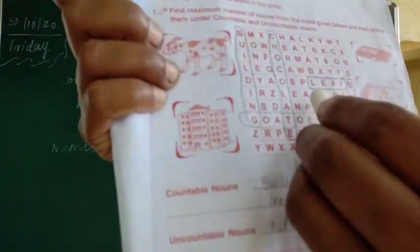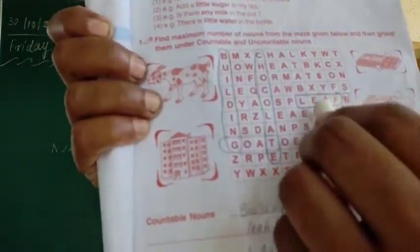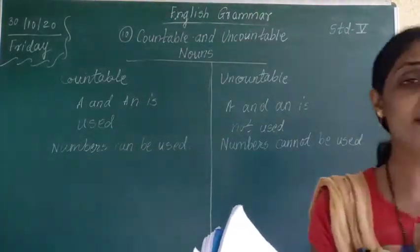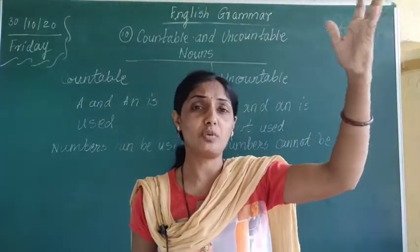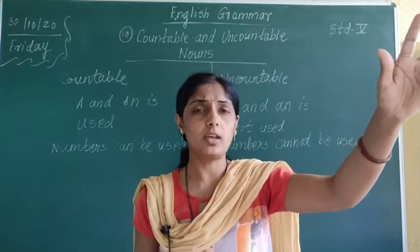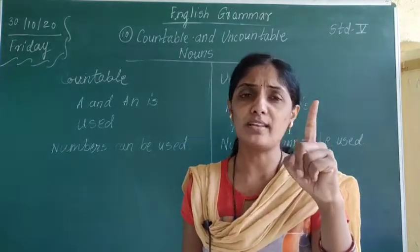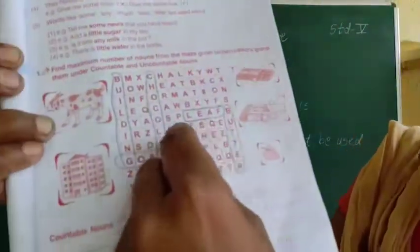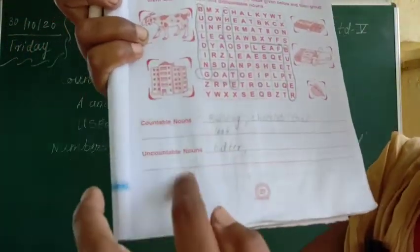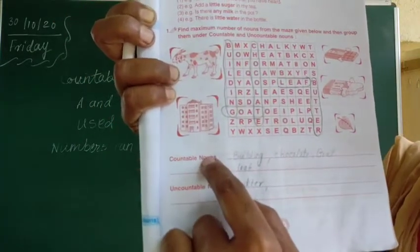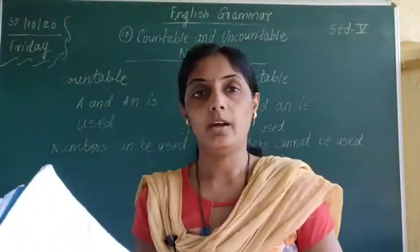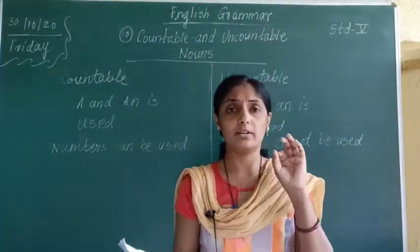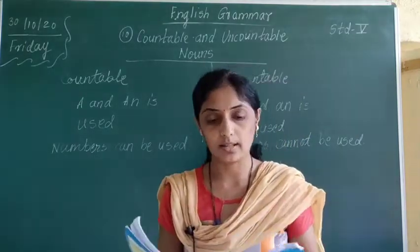The next picture is a leaf. Find the word L-E-A-F and circle it. Now, one leaf — can you count one leaf? Yes. There will be lakhs and crores of leaves on one tree so leaves are uncountable in total, but one leaf is countable. So circle the word leaf and write it down under countable nouns.